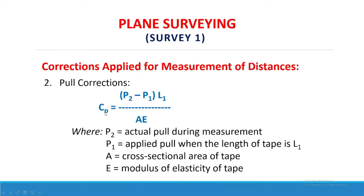For pull correction, C sub P equals (P sub 2 minus P sub 1) multiplied by L sub 1, all over A times E, where P sub 2 is the actual pull during measurement, P sub 1 is the applied pull when the length of tape is L sub 1, A is the cross-sectional area of the tape, and E is the modulus of elasticity of the tape.